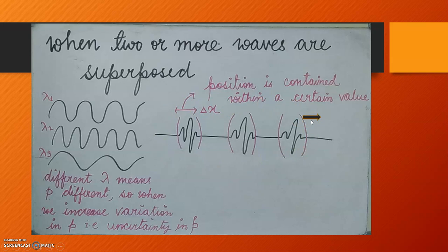Now, think again. When we are superposing three different waves with three different wavelengths or momenta, what we have done? We have increased the variation in momentum. And, by increasing the variation in momentum or the uncertainty in momentum, what I have received? I have received a wave like this.